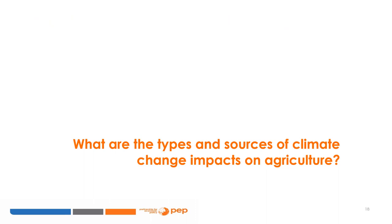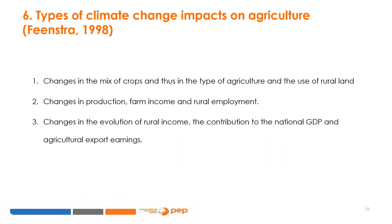Now, what are the types and sources of impacts of climate change on agriculture? The literature differentiates between several types of climate change impacts on agriculture. These include: (1) changes in the mix of crops and thus in the type of agriculture and the use of rural land; (2) changes in production, farm income, and rural employment; and (3) changes in the evolution of rural income, the contribution to the national GDP, and agricultural export earnings.